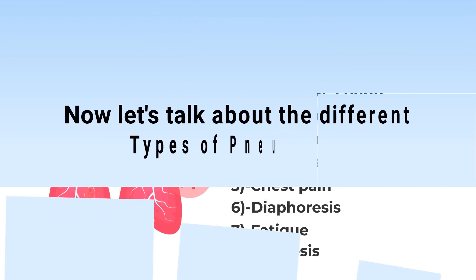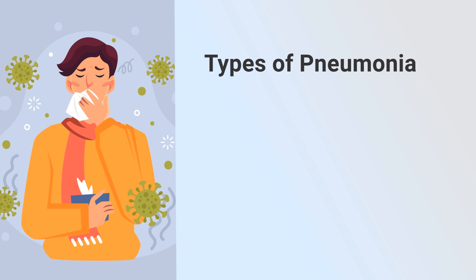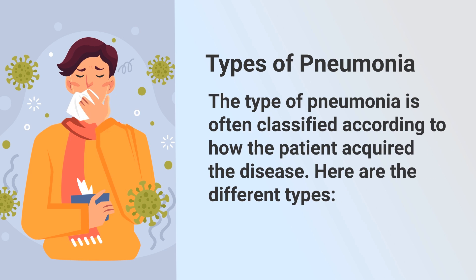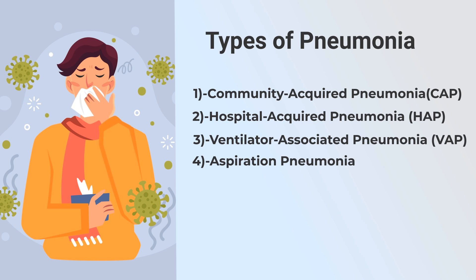Now let's talk about the different types of pneumonia. The type of pneumonia is often classified according to how the patient acquired the disease. Here are the different types: community acquired pneumonia, hospital acquired pneumonia, ventilator associated pneumonia, and aspiration pneumonia.